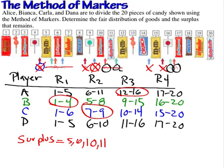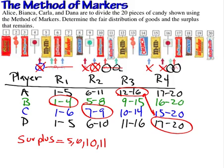Now that Player A got Round 3, Player D gets Round 4 — items 17 through 20. There are no missing numbers between 16 and 17, so no more surplus is added. This is our final distribution: Alice gets items 12 through 16, Bianca gets items 1 through 4, Carla gets items 7 through 9, and Dana gets items 17 through 20. The surplus consists of items 5, 6, 10, and 11.